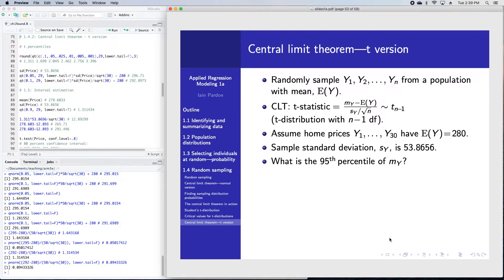Let's run through an example of how to use that t-version of the central limit theorem. Now my assumptions are only that we're randomly sampling n values of Y from a population with a mean of E(Y). I'm not assuming a normal distribution and I'm not assuming a particular value for the standard deviation.